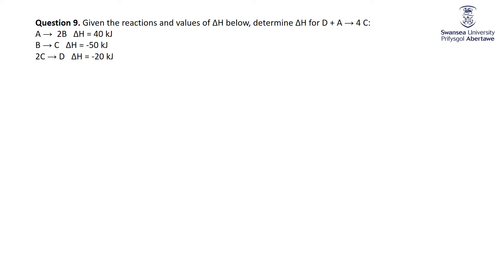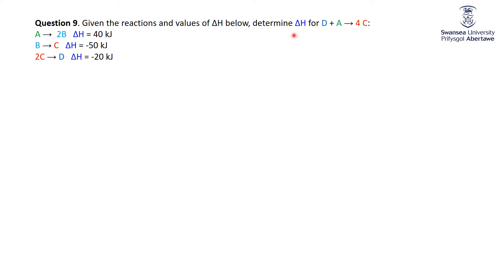Here's a simple example using letters. The target equation is 2D + A → 4C, and I want to find ΔH for that reaction. I have three equations containing A, D, C, and also some B's. If I can modify those equations so that when I add them together I get the overall equation, then I modify the ΔH values in the same way to get the overall ΔH.